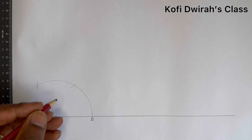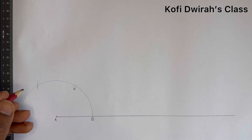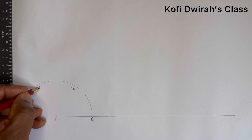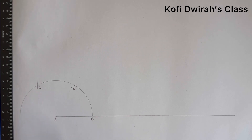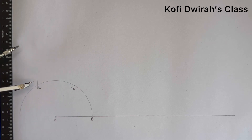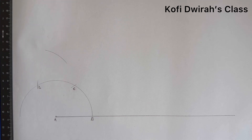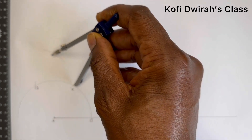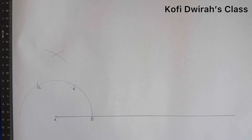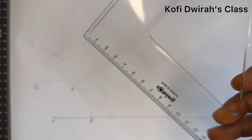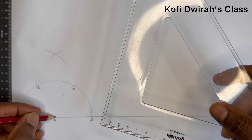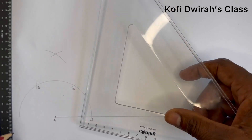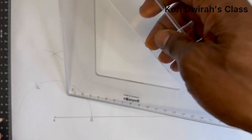Now you have point C and point D. To get the 90 degrees angle, bisect points D and C. At point D you draw an arc, at point C you draw another arc, and then you draw a straight line from point A through this point.